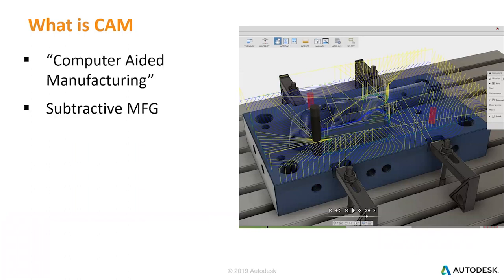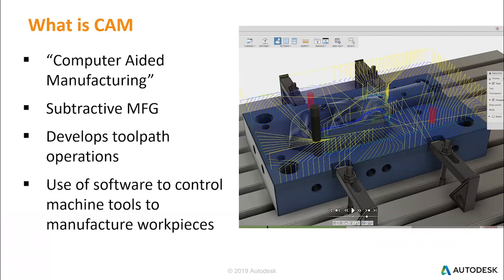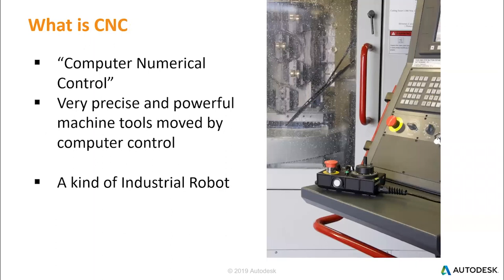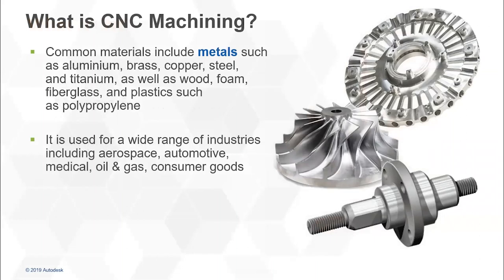CAM is computer-aided manufacturing. Some people also refer to it as subtractive manufacturing, where we're taking raw material and removing material — think about whittling wood away. We're going to develop the toolpaths and then take that toolpath out to a CNC machine. A CNC machine is computer numeric control. So instead of manually taking a mill and moving it X, Y, and Z, we're basically running the X, Y, Z through the CNC machine. We're really removing material — that can be metals, wood, or different plastics.